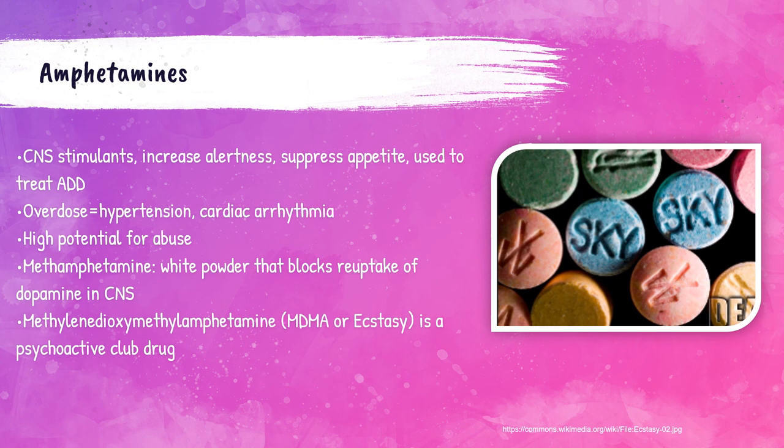Amphetamines are drugs that stimulate the central nervous system. They increase alertness and are appetite suppressors. They have a high potential for abuse, with overdoses causing an increase in blood pressure and arrhythmias of the heart. Methamphetamine and ecstasy are illegal street amphetamine examples.